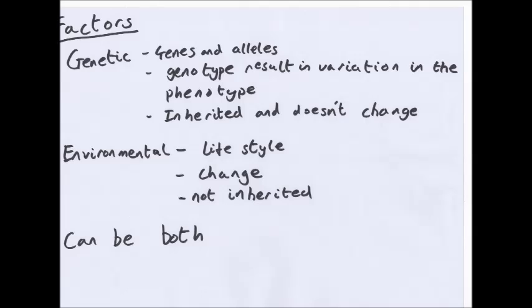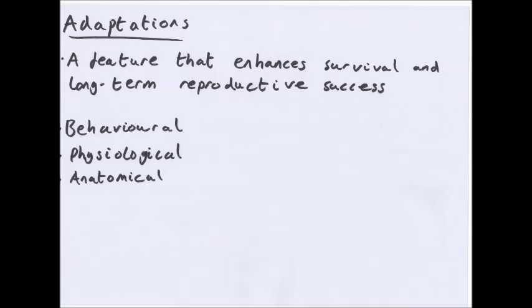So what does variation lead to? It leads to adaptation. Adaptation is a feature that enhances survival and long-term reproductive success. There are three types of adaptations: behavioural, physiological and anatomical. Behavioural is ways an organism acts that increases its chance of survival. Physiological is processes inside an organism's body that increases its chance of survival. And anatomical is structural features of an organism's body that helps it survive.